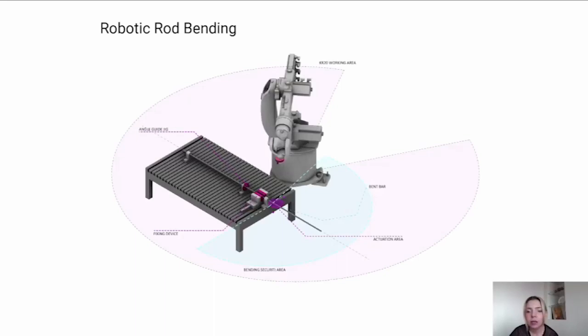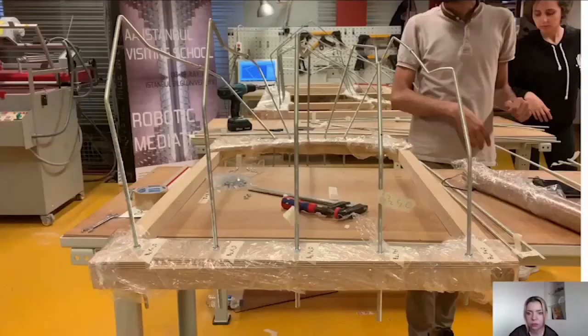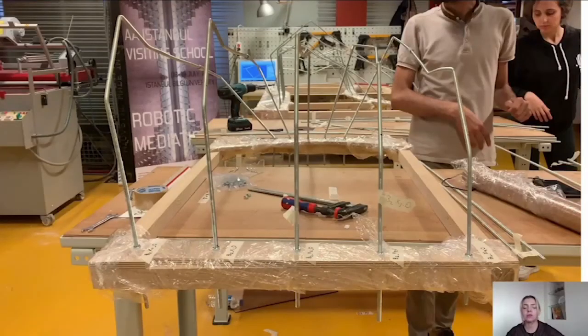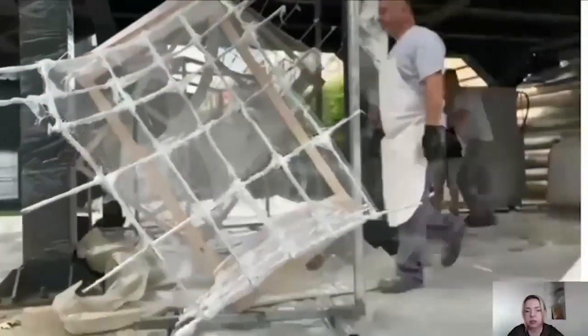And finally, we started fabricating the selected design candidates. This is showing the custom developed robotic rod bending setup, including the jig, the security area, the bending area, and the actuation area. And these are the robotically fabricated steel rods that would be placed under the textile mesh. And this is the assembly process before the mesh was applied. And here we see the mesh being applied on the steel rods and the fixing of the mesh.